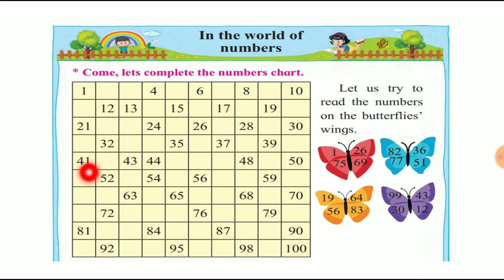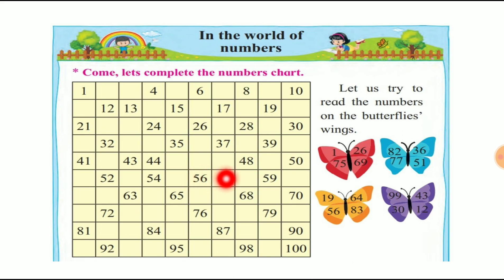41, 42, 43, 44, 45, 46, 47, 48, 49, 50. So there are 41 to 50 in serial order.